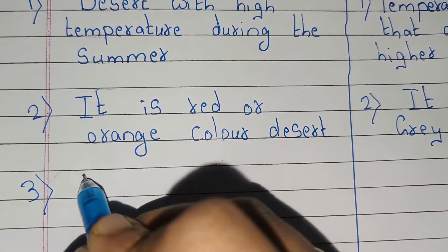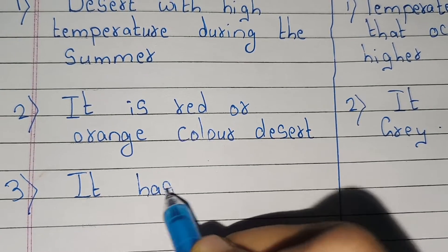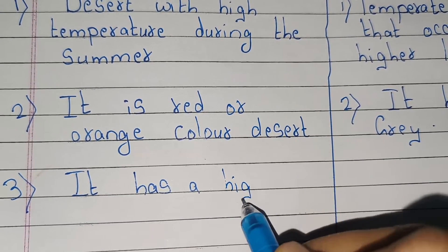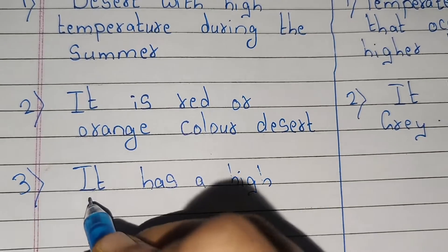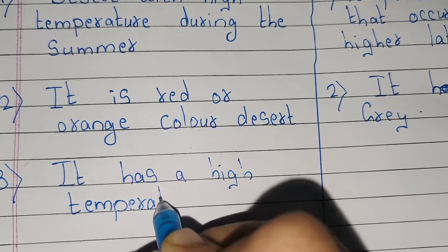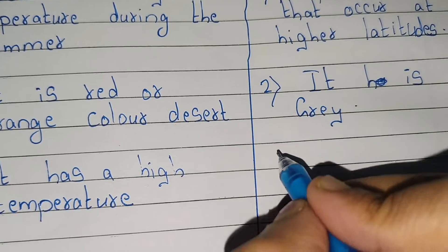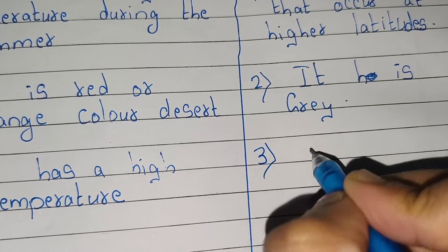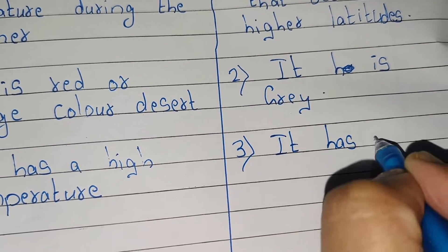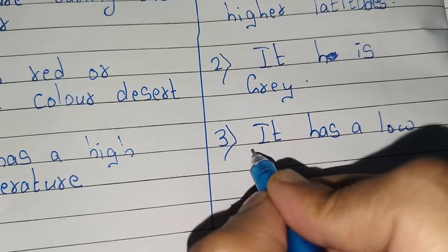Third point: in hot desert, it has a high temperature. And in cold desert, it has a low temperature.